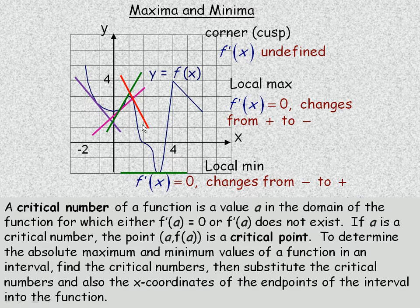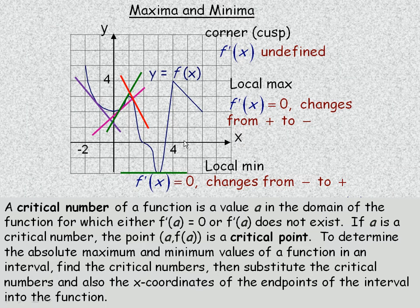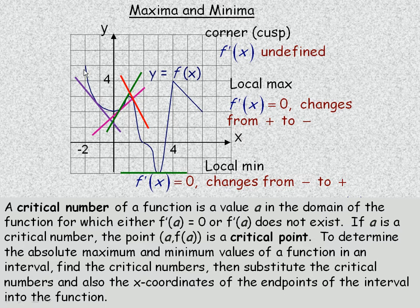Looking at this function from x equals negative 2 to positive 6, this point here is the absolute maximum point for the whole graph. Notice that it does not occur at a local minimum or local maximum point — it occurs at an endpoint, where x is 6. The absolute minimum value would be the y-value of negative 2, and it does actually occur at a local minimum point.